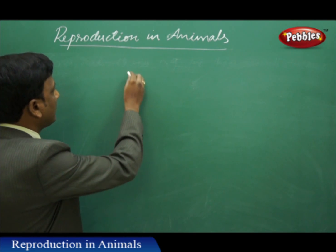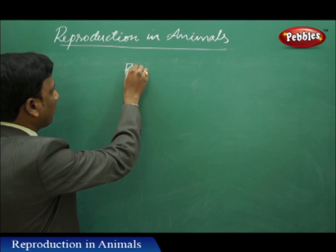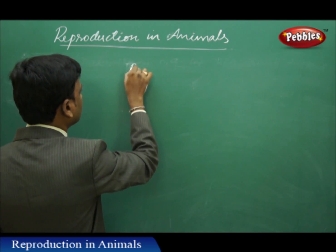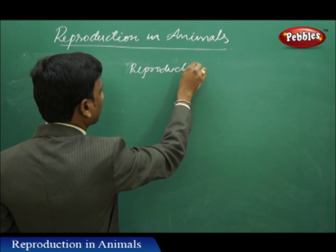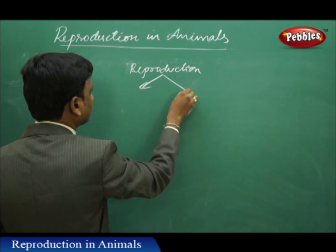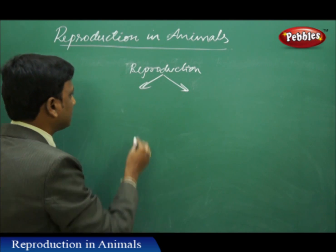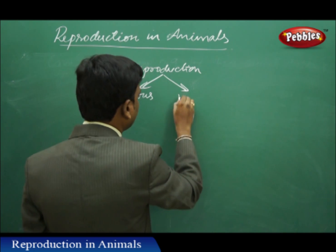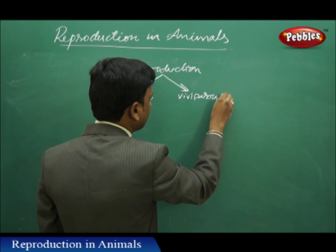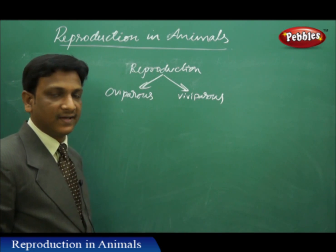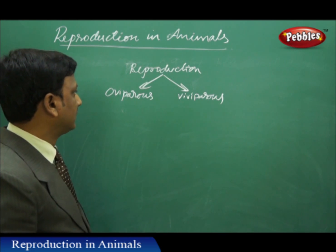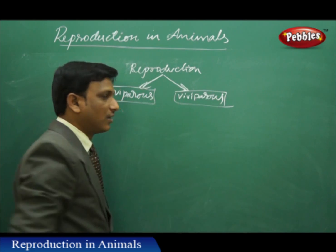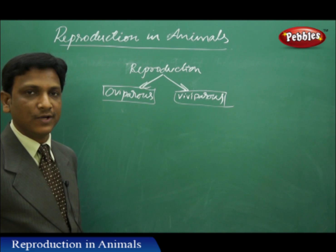So basically, if we see how animals are producing their young ones, we see two ways. Depending upon the reproduction, animals can be classified as oviparous — that means animals which lay eggs — and viviparous — meaning animals that give birth to the offspring directly. So animals are classified into two groups according to the method by which they reproduce.